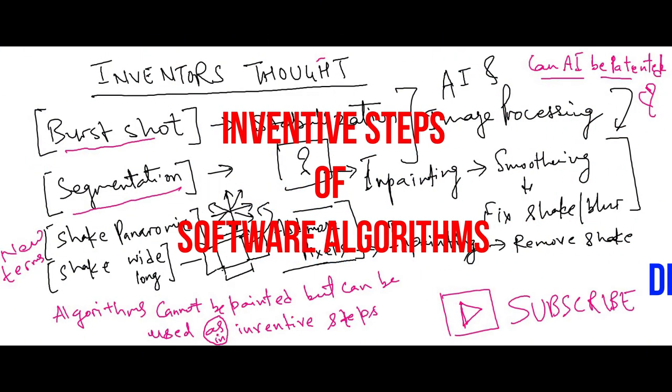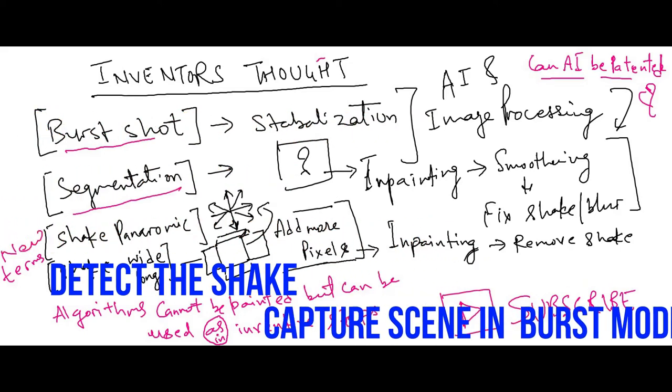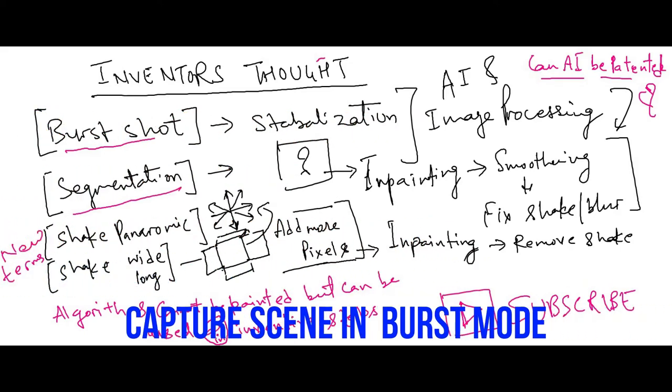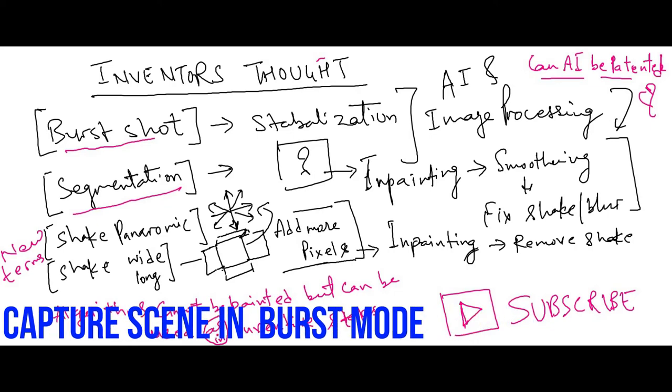Detect the shake when shake crosses the threshold. Switch to burst mode, utilize those images to remove blur effects or cancel the shake.